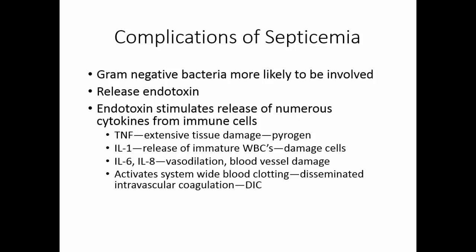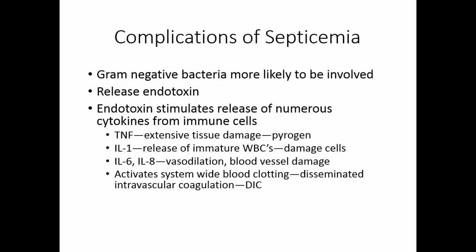Endotoxins can also activate system-wide blood clotting, known as disseminated intravascular coagulation. No functional clots are formed anywhere in the body, but the clotting factors are used consistently throughout the body. Should you need a clot, you do not have clotting factors to make it, and these people can bleed out very quickly. Aggressive treatment with antibiotics early in septicemia is very important. If caused by gram-negative bacteria and treated too late, you can release too much endotoxin and actually do more damage than good.